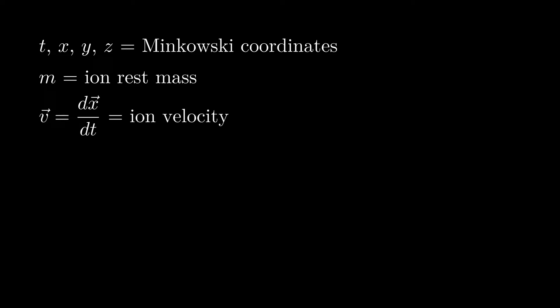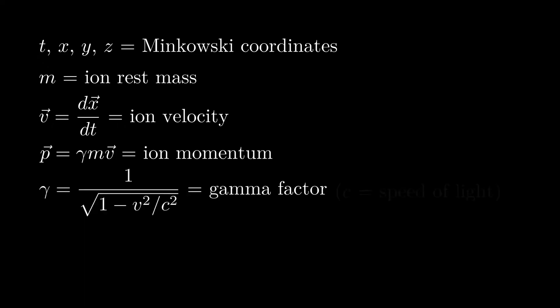Now, the velocity of an ion, as measured in the inertial frame, is the time derivative of X vector, where X vector is the vector of spatial coordinates. The momentum of the ion is denoted P vector and is equal to the product of gamma, M, and the velocity vector. The relativistic gamma factor is defined by 1 over the square root of 1 minus V squared over C squared, where V is the magnitude of the velocity. In particular, the Z component of momentum is gamma times M times the Z component of velocity.